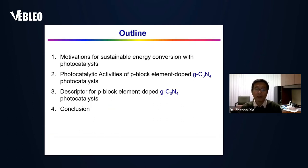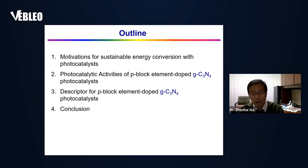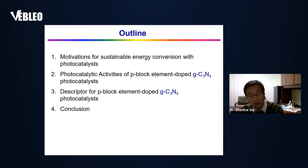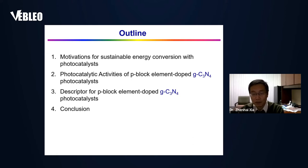This is the outline of my talk. First, we're going to give motivation for why we do this topic. Then we're going to introduce the photocatalysis activities of doped carbon nitride. Then we'll give the descriptor and activity indicator calculated from DFT, and finally we'll give conclusions.